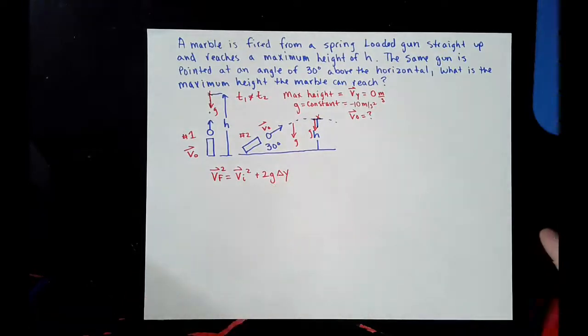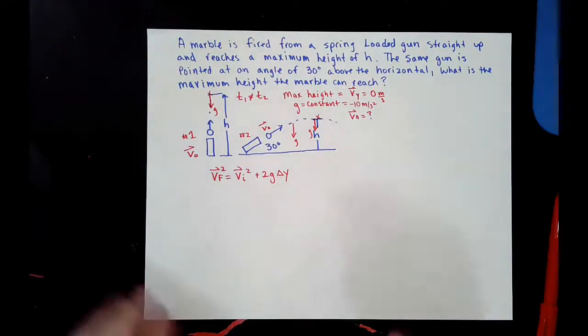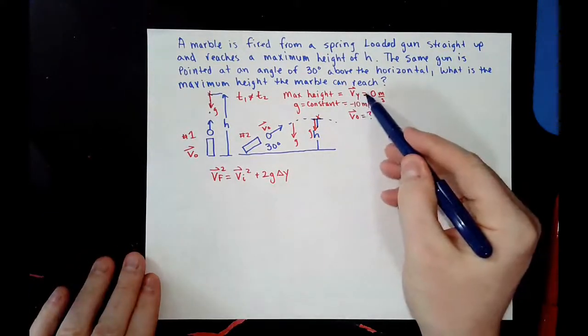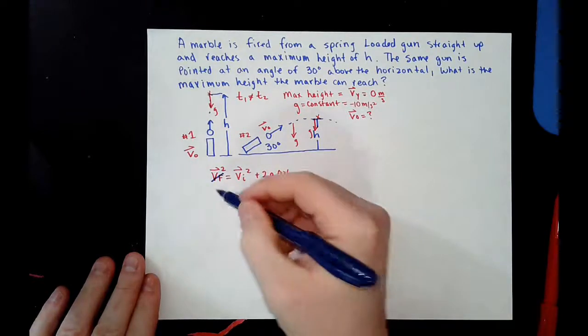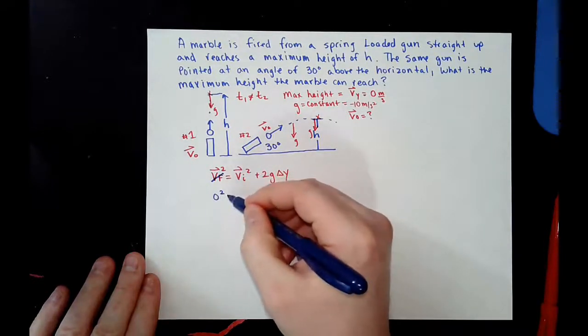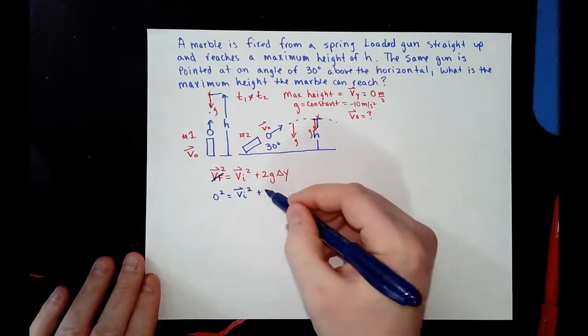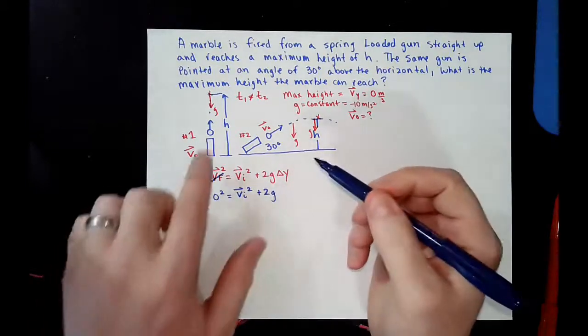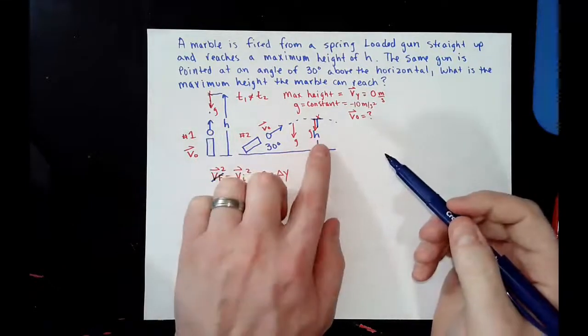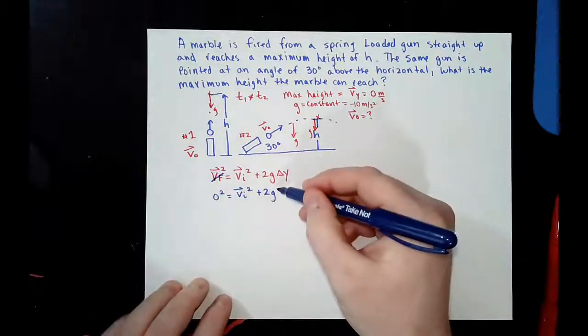Well, that is a change in vertical displacement. Now, we have said before that at maximum height, this is 0. So, we can rewrite this as 0 squared equals vi squared plus 2g. And in both situations, they do not use delta y. They use h.